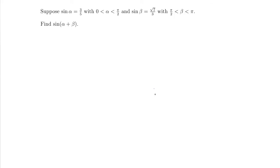Let's take a look at how to use the sum formula for sine to evaluate sine of alpha plus beta, if we know what sine of alpha is and what sine of beta is. The first step when attacking any problem like this, where you're not given the angles but just given some alpha and beta unknowns, is to first write down the proper formula.